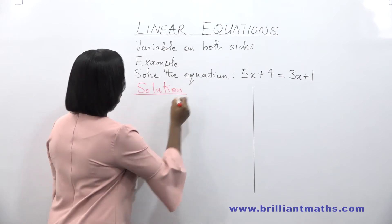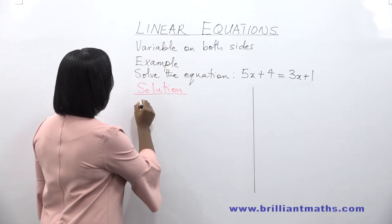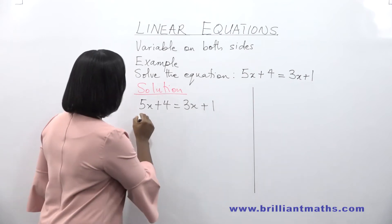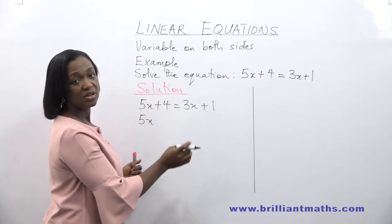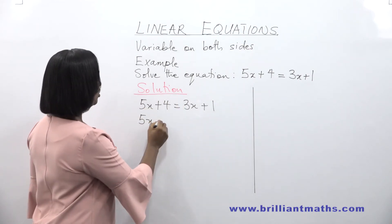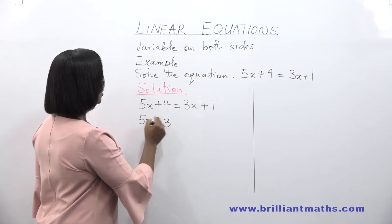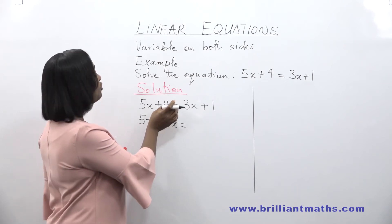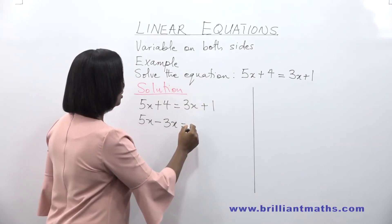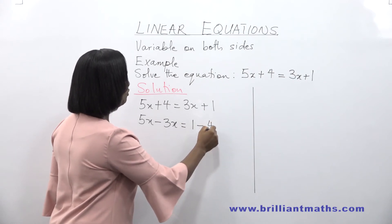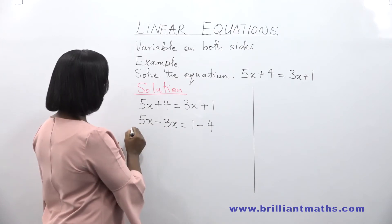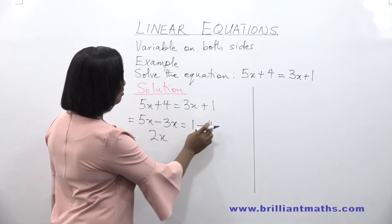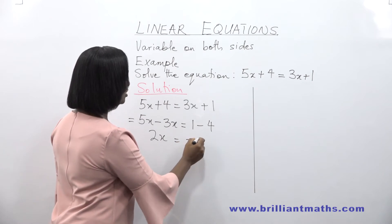Whenever you have the unknown on both sides of the equation, you have to group the like terms. It is more conventional to collect the unknown on the left side of the equation. So: 5x plus 4 is equal to 3x plus 1. We take 3x from the right hand side to the left, so it becomes minus 3x. So 5x minus 3x is equal to... and then we send the constant term 4 from the left hand side to the right, becoming 1 minus 4. So 5x minus 3x is equal to 2x, and 1 minus 4 is equal to minus 3.